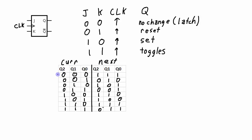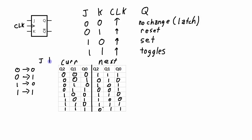And Q0 goes from a 0 to a 1. All in all, we could have four different transitions: the flip-flop could be a 0 transitioning to a 0, it could be a 0 transitioning to a 1, it could be a 1 transitioning to a 0, or it could be a 1 transitioning to a 1. For each one of these transitions, we want to determine what value J should be and what value K should be to cause that transition to occur.